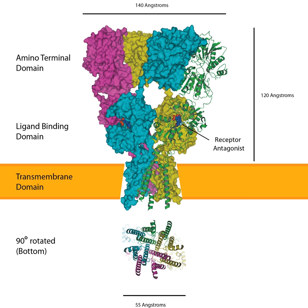In the regulated pathway, GluA-1-containing AMPA receptors are trafficked to the synapse in an activity-dependent manner, stimulated by NMDA receptor activation. Under basal conditions, the regulated pathway is essentially inactive, being transiently activated only upon the induction of long-term potentiation. This pathway is responsible for synaptic strengthening and the initial formation of new memories.